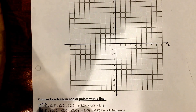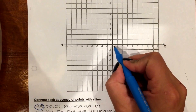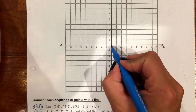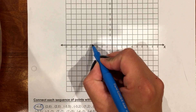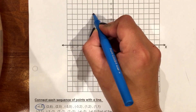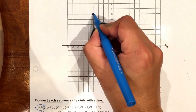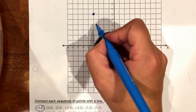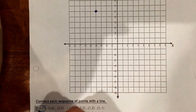We're going to look at the first point, which is negative 4, 6. I'm going to start at my origin and graph like normal — go negative 4, up to 6, and graph my point. I want you to do exactly the same with me on your paper as I'm doing now.